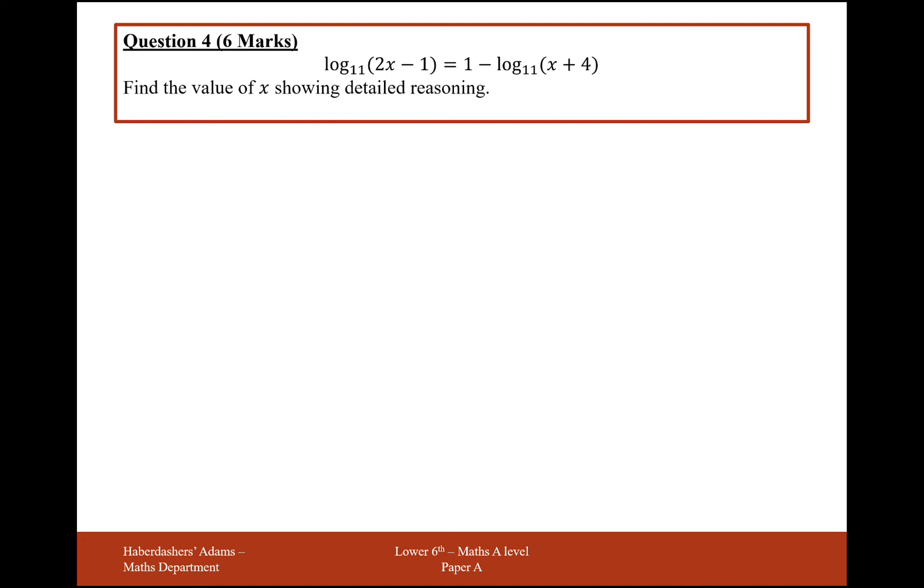What we're going to do here is get all our logs on one side, take 11 to the power of both sides, and then sort things out from there. So start with log base 11 of (2x - 1), and we're going to add log base 11 of (x + 4) onto the other side. So log base 11 of (2x - 1) plus log base 11 of (x + 4) equals 1.